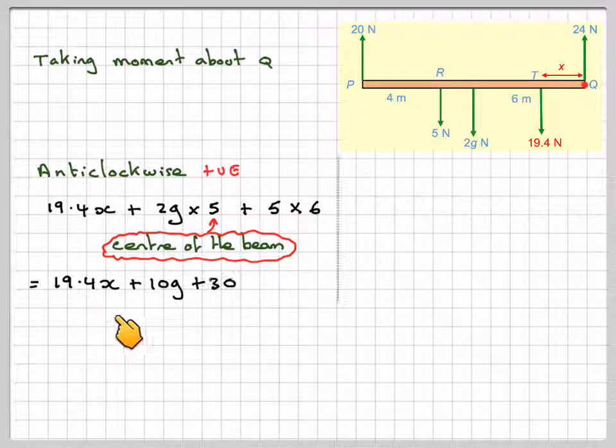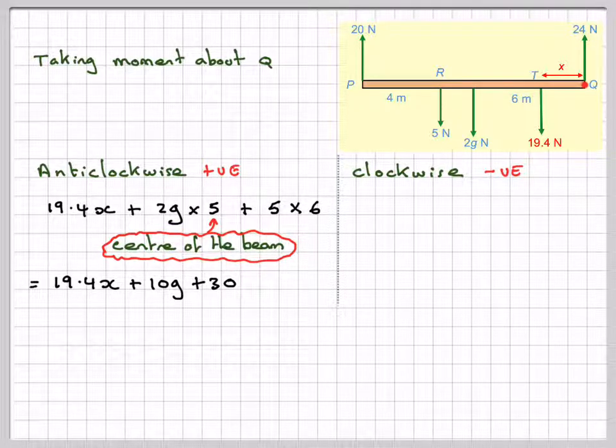So that gives 19.4X plus 10G plus 30. Clockwise is minus negative, so minus 20 times 10. So this one here, going this way, minus 20 times 10, which gives me minus 200.